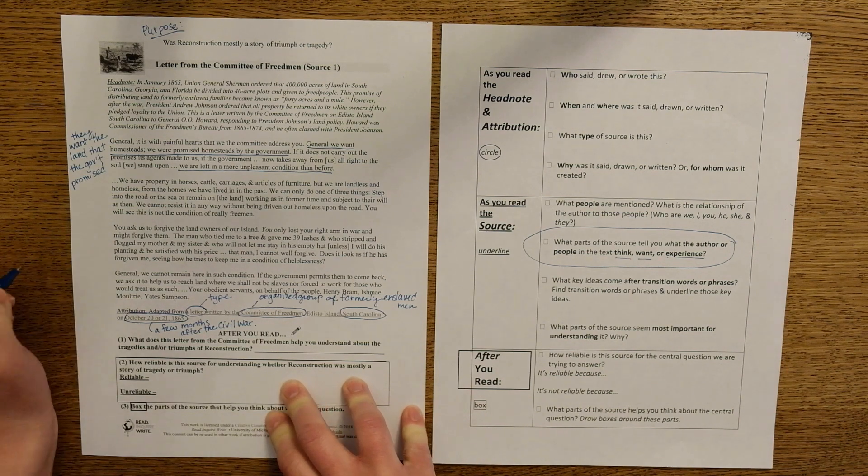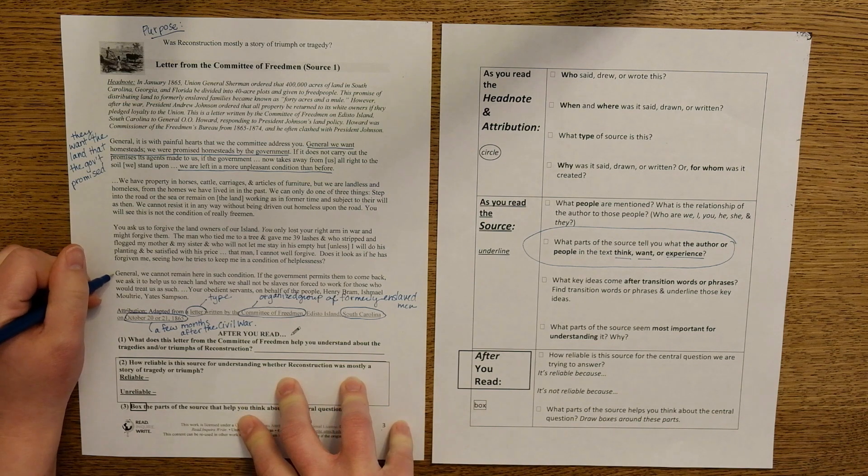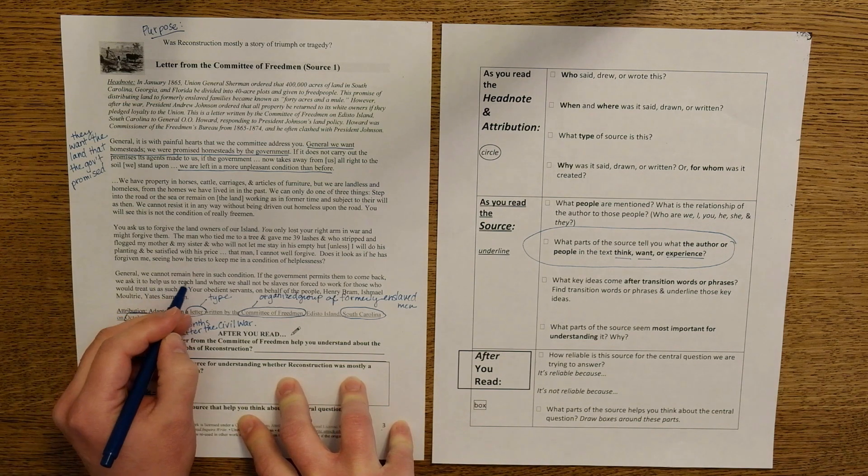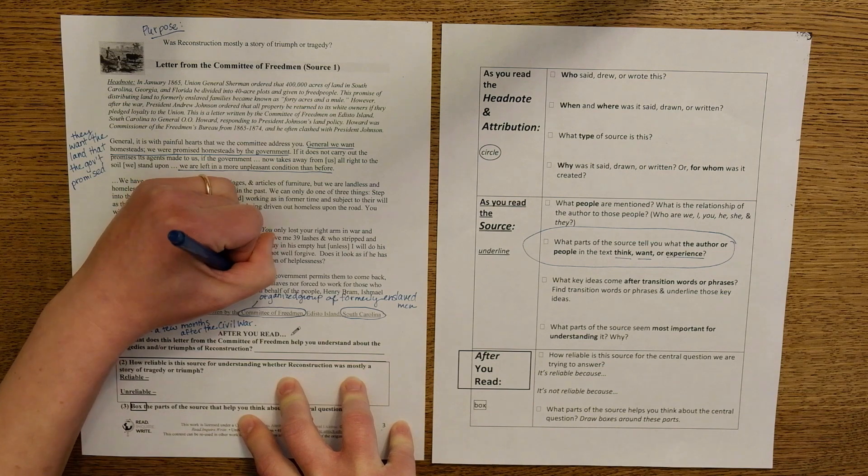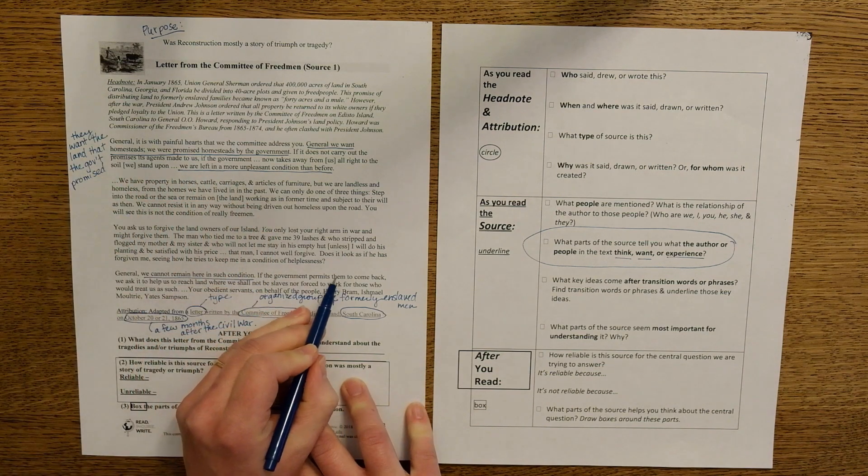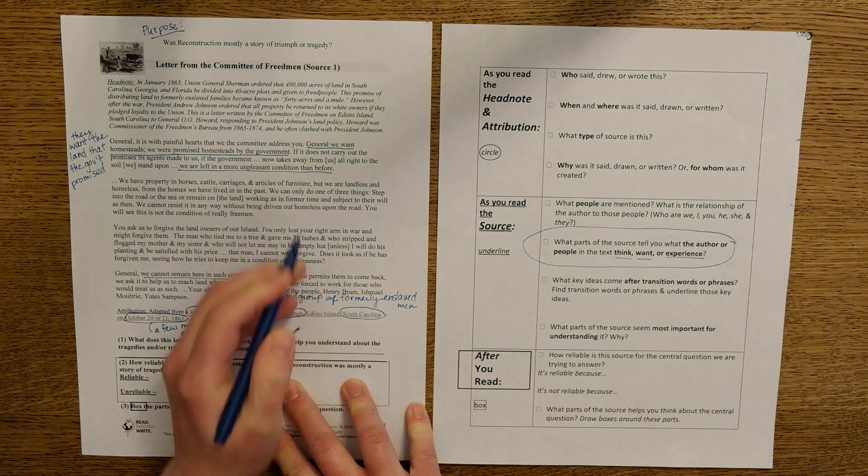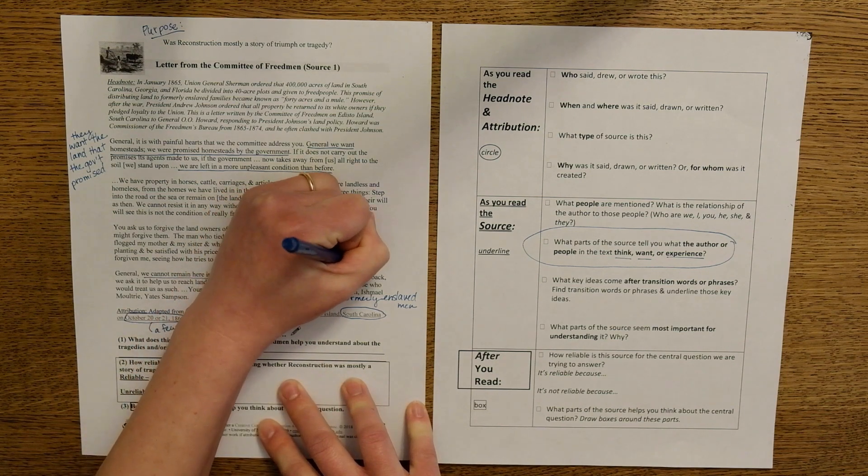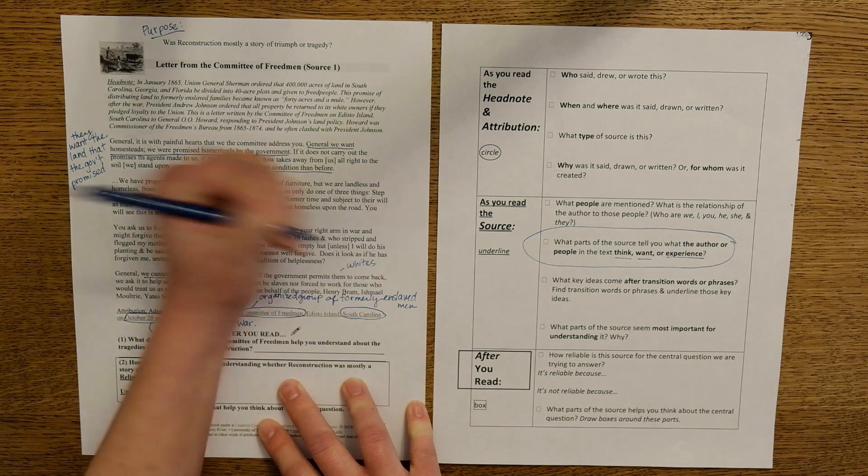Okay, last paragraph. It says, General, we cannot remain here in such a condition. It's what they think. If the government permits them, them is white landowners. So I'm just going to put whites.